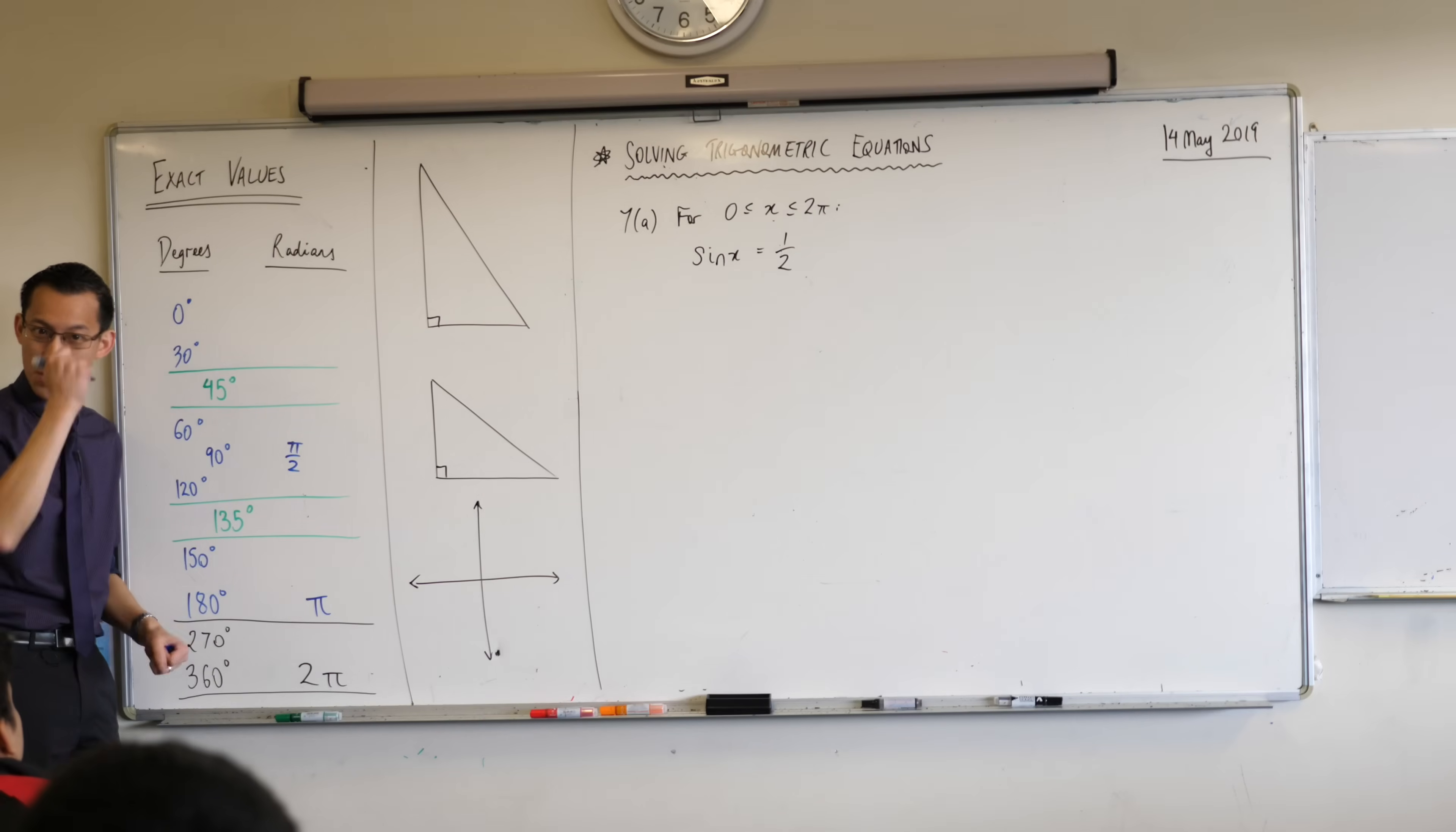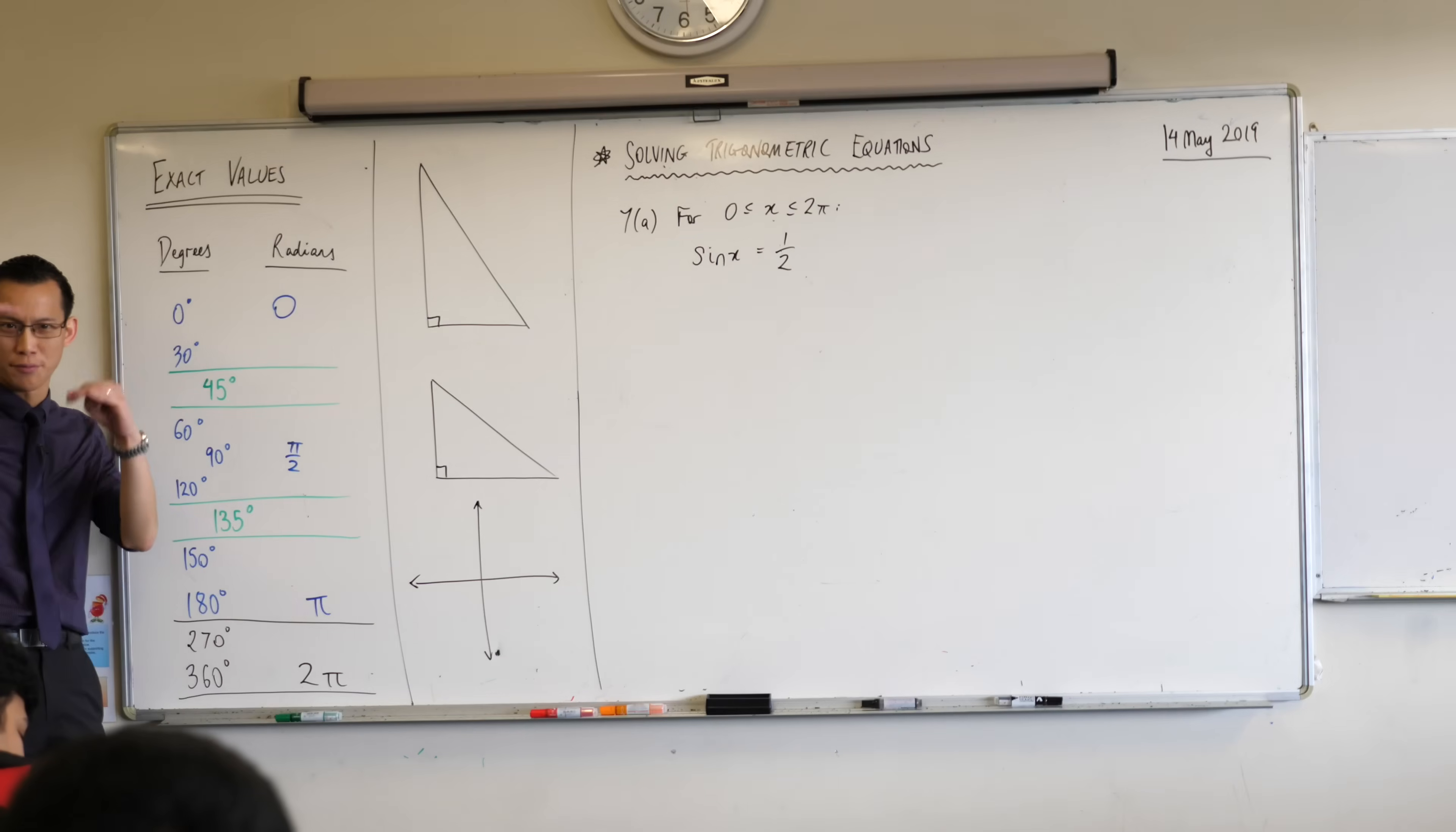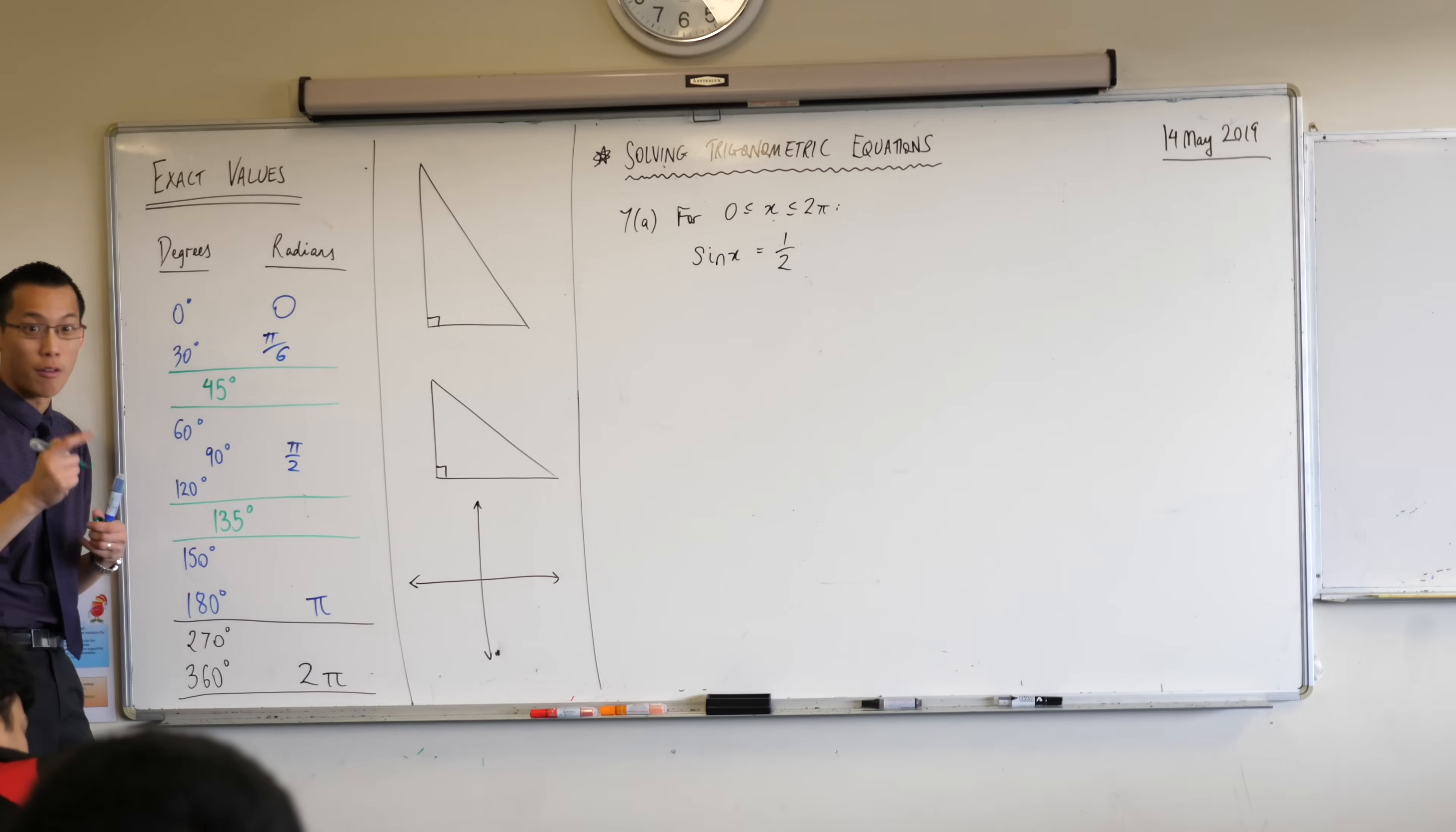Zero degrees, how many radians is that? Zero. It's not like Fahrenheit and Celsius which have different zeros. When we go to 30 degrees, I think the easiest way to think about it is 30 degrees is a sixth of 180 degrees, so therefore if this is π then to get from 180 degrees to 30 you divide by 6, so this should be π/6. We already did 45 degrees, it's π/4.